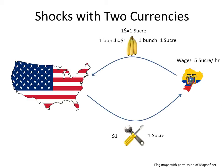Now let's look at the adjustment process to exactly the same shock, but assuming we start with two currencies. Let's begin where $1 equals one Ecuadorian sucra — so one bunch of bananas has a price of one sucra or $1 in the United States, and wages are 5 sucra per hour in Ecuador. We'll again assume people in the United States decide they don't want so many Ecuadorian bananas. As a result, the demand for Ecuadorian currency falls, because people wanted sucras in order to buy bananas. Now that they want fewer bananas, they're less willing to pay for sucras. So instead of paying $1 to get one sucra, people in the United States are now only willing to pay $0.80 for one sucra.